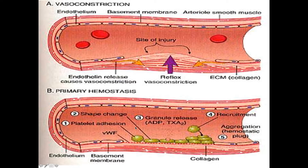Von Willebrand factor will bind to the first layer of platelets in a process called adhesion. The binding site on platelets is called GP1b, standing for glycoprotein 1b. The importance of this is in pathological processes.